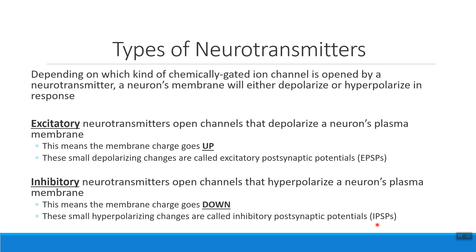We also have IPSPs for inhibitory neurotransmitters. Remember the postsynaptic neuron is the neuron who receives the message. If that message made their membrane charge go down, we call it an inhibitory change in their membrane charge — an IPSP, where the membrane charge goes down.